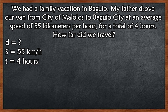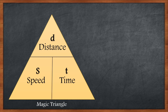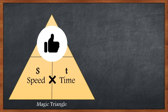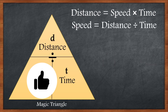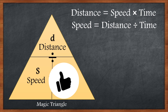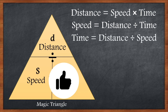Para madali tayo makapag-solve, identify muna natin ang mga value for distance, speed, and time. Kapag okay na, malalaman natin kung ano ang value na nawawala. So, pupunta tayo dito sa magic triangle. Dito sa magic triangle, makikita natin at malalaman ang mga formula. Kapag distance ang nawawala, tatakpan natin siya — distance equals speed times time. Kapag speed ang nawawala, speed is equal to distance divided by time. Last, kapag time ang nawawala, time is equal to distance divided by speed.